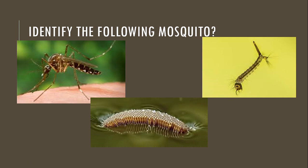Identify the following mosquito. Looking at the adult mosquito, this mosquito is lying in a hunchback position. The characteristics of the eggs are in clusters and raft-like, and the larvae has a siphon — so this mosquito is Culex.